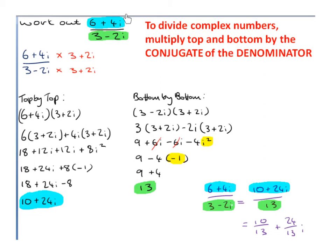Work out 6 plus 4i divided by 3 minus 2i. To divide one complex number by another complex number, we multiply the top and the bottom by the conjugate of the denominator. So we're going to multiply the top and the bottom by the conjugate of 3 minus 2i, which is 3 plus 2i — we just change the sign of the i. We'll work out the numerator and denominator separately and then put them back together.